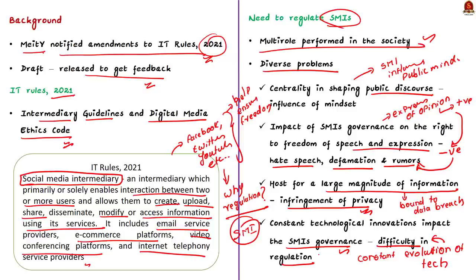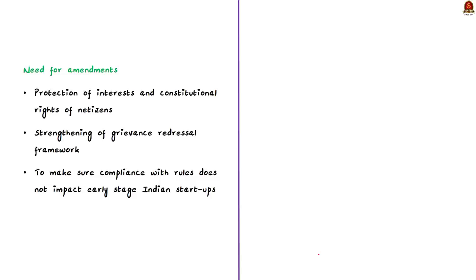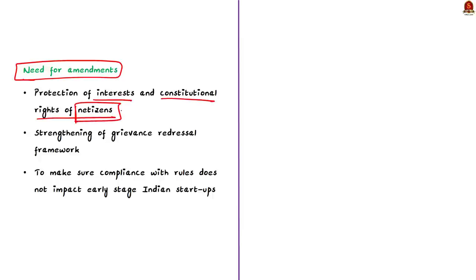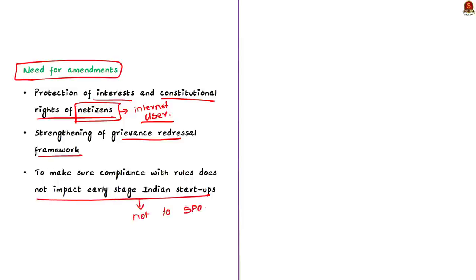All these are reasons why it is important for the government to update their regulatory framework to face the challenges associated with social media intermediaries. This is exactly why the IT Rules 2021 came into existence, and the amendment we are seeing today is one such step to cope with emerging challenges. What necessitated the amendment? First, there was a need to ensure that interests and constitutional rights of netizens are not violated by big technology platforms. Second, there is a need to strengthen the grievance redressal framework. Third, compliance with rules should not impact early-stage Indian startups — the amendments should create an environment conducive for their functioning.